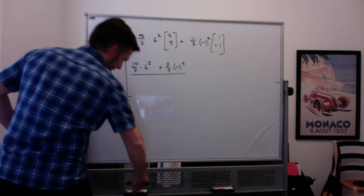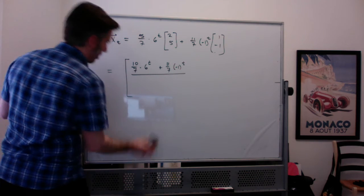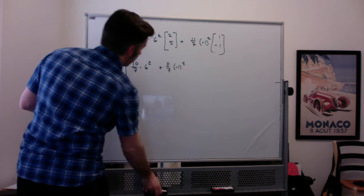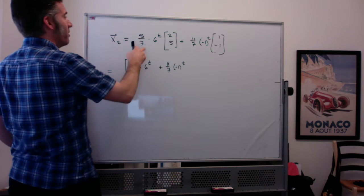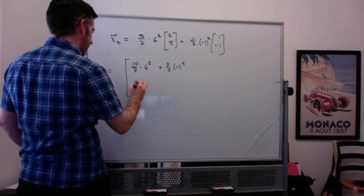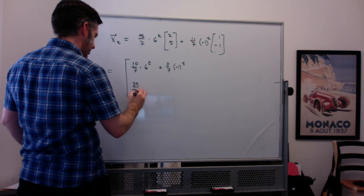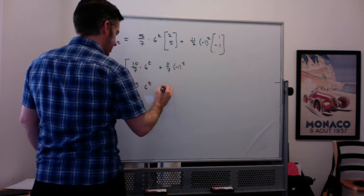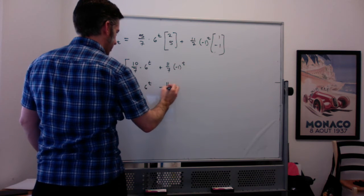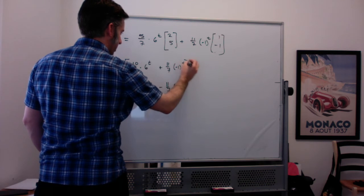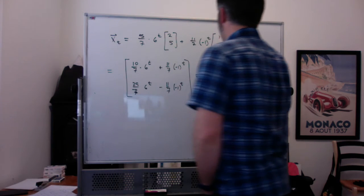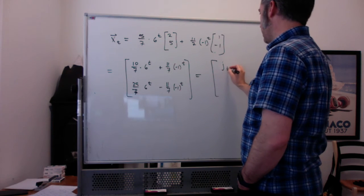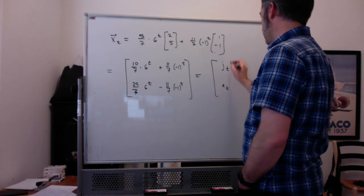5 sevenths times 5 is 25 sevenths times 6 to the t, and then minus 11 sevenths times negative 1 to the t. And again, this is the number of juveniles at time t and the number of adults at time t.